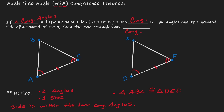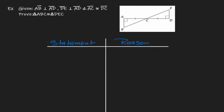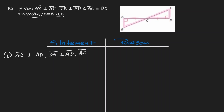Now that we have seen that illustration, let's take a look at one example. The objective here is to show that there is congruency between two triangles — triangle ABC and triangle DEC. Before we start thinking about how to approach this problem, let's just list the given. We know that AB is perpendicular to AD, and we also know that DE is perpendicular to AD. In addition, we know that AC is congruent to DC.